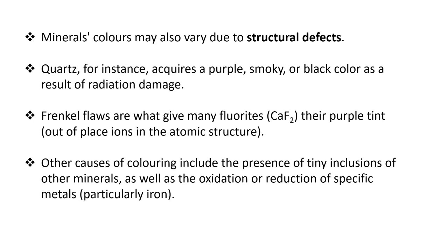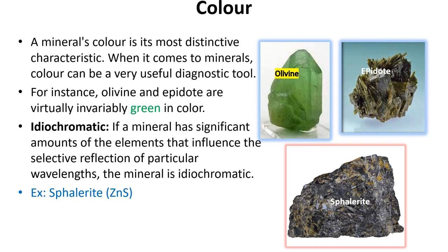Frenkel flaws also give some fluorides their purple color. Other causes of coloring include the presence of tiny inclusions of other minerals, as well as oxidation or reduction of specific metals, especially iron. Minerals can be classified into idiochromatic and allochromatic types. Color is a distinctive characteristic, but for some minerals it is a very useful diagnostic tool — for instance, olivine, epidote, and some other minerals are invariably green.